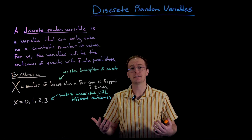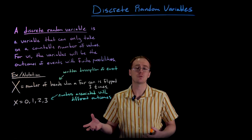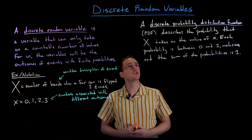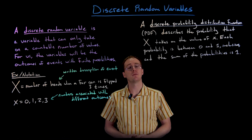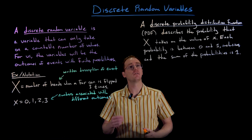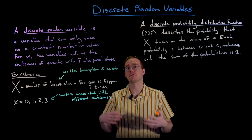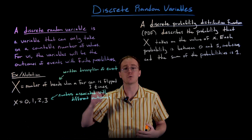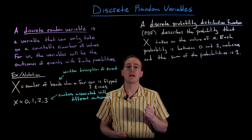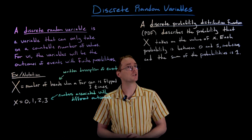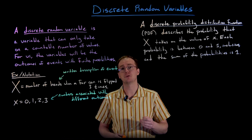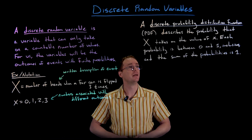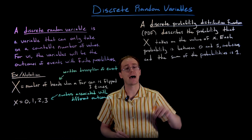The next term to introduce is the probability distribution function. A discrete probability distribution function, or PDF for short, describes the probability that the event X takes on the value of little x. A few important characteristics: each probability must be between zero and one inclusive, and the sum of all probabilities must add up to one.